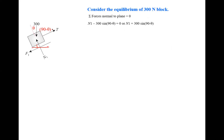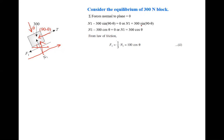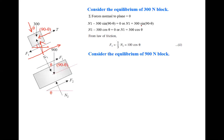Applying sigma Fy equal to zero in the normal direction: N1 minus 300 sine(90 minus theta) equals zero, giving N1 equals 300 cosine theta. Since the coefficient of friction mu equals 1 by 3, F1 equals (1/3) times N1, which equals 100 cos theta.